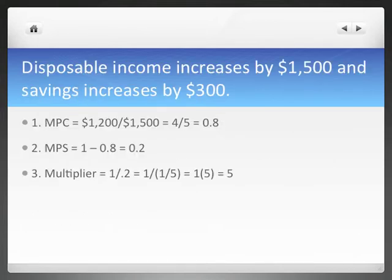Disposable income increases by $1,500 and savings increases by $300. So that was our problem solving for the MPC, the MPS, and the multiplier. So our changes, again, we have 1,200 as our change in consumption over our change in disposable income. 1,200 over 1,500 equals 4 fifths equals 0.8 is our MPC. Our MPS, 1 minus 0.8 equals 0.2. This math is really, really tough, isn't it? So intimidating. Multiplier, third question. Now we do 1 over the MPS, so 1 over 0.2 is the same as 1 over 1 fifth equals 5. That's it. That's all there is to it. It's not too bad.